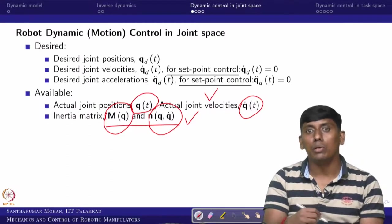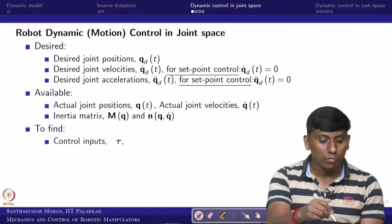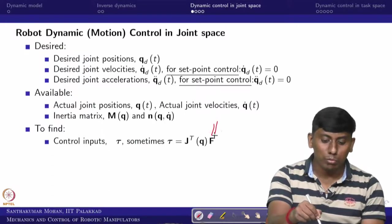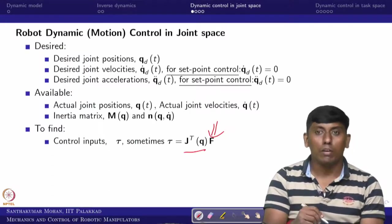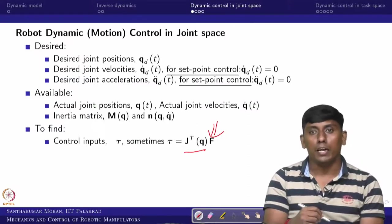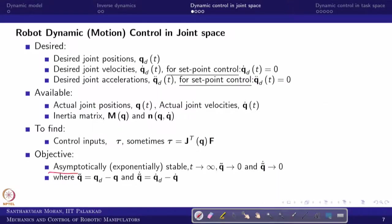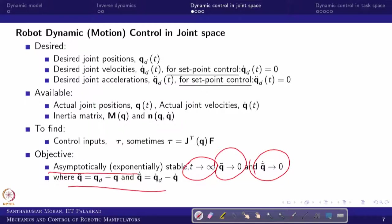What we are trying to find is tau. For example, if we are trying to do it in task space, then the task space would be f, and tau equals J-transpose(q) times f. We expect that as t tends to infinity, the closed-loop system is exponentially or asymptotically stable — meaning q-tilde and q-dot-tilde tend to zero. The second-order error dynamics is supposed to be stable.